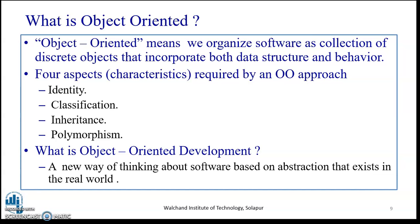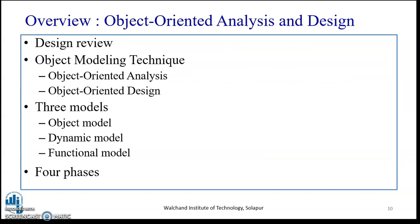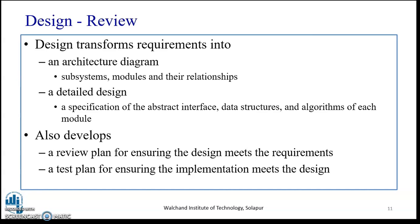Object oriented development is a new way of thinking about software based on abstraction that exists in the real world. The overview of object oriented analysis and design consists of the object modeling technique, which includes analysis and design. There are three models: the object model, the dynamic model, and the functional model, followed by understanding the four phases of object oriented analysis and design.